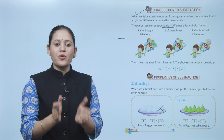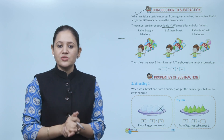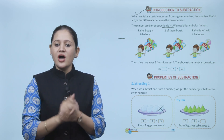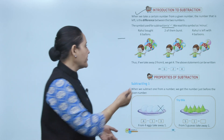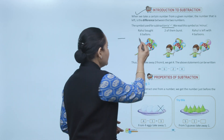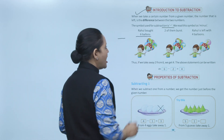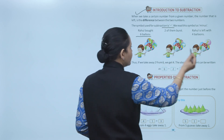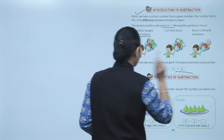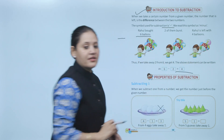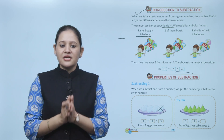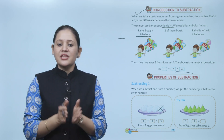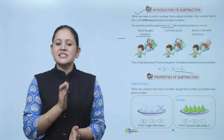Here, Rahul bought 6 balloons and 2 of them burst. So how many balloons are left with Rahul? Total he has 6 balloons, out of that 2 balloons burst. So 6 minus 2 equals 4. If we take away 2 from 6, we get 4.